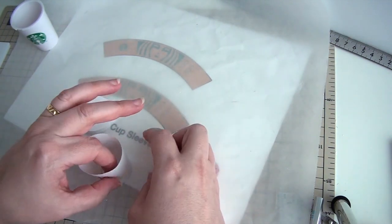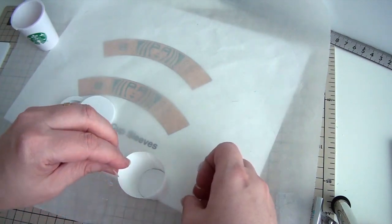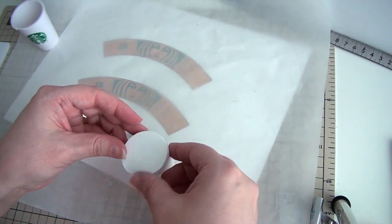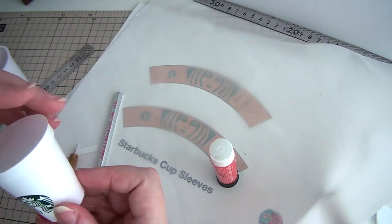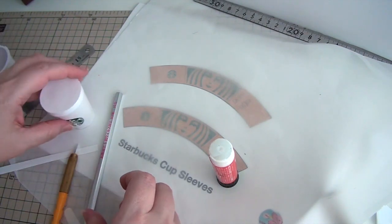This is optional. Glue the big circle paper print on the big foam board circle for a cleaner look. You don't have to, but I did this later and the cup lid was much better looking.